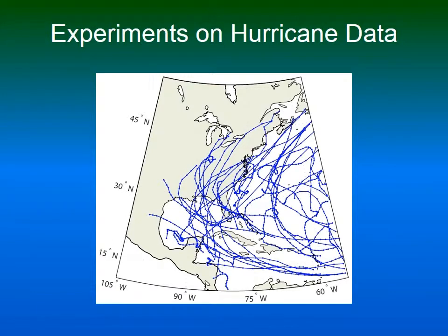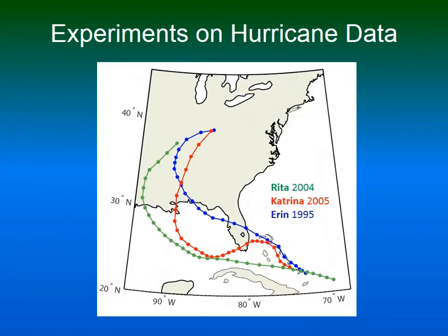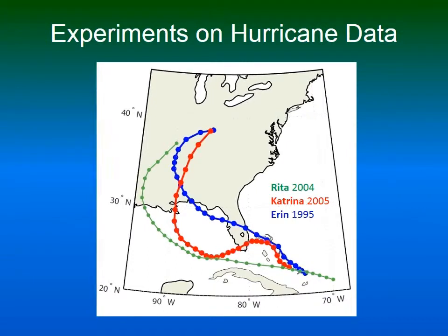We computed similarities between all 48 hurricanes and filtered out the most similar ones. We looked in particular at those crossing land. One interesting triple are the hurricanes Erin, Rita, and Katrina. We note two effects. First, when increasing the influence of the geographic context on the similarity, Erin and Katrina remain similar, while the other two pairs become less similar.